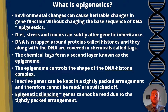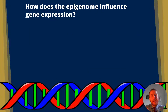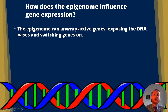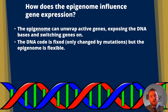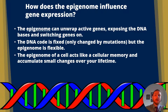When we talk about gene expression, we're talking about RNA polymerase forming mRNA, which will lead to a protein. The epigenome can unwrap active genes, exposing the DNA bases and switching genes on. The DNA code is fixed and only changed by mutations, but importantly, the epigenome is flexible. Our epigenomes will change depending on our environment — whether we smoke, whether we read books, whether we exercise. These are all things that will affect our epigenome, and we can pass them on to our children. The epigenome of a cell acts like a cellular memory, and it accumulates small changes throughout the course of your life.